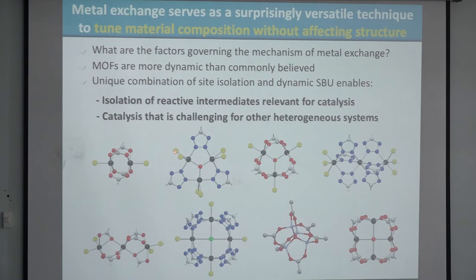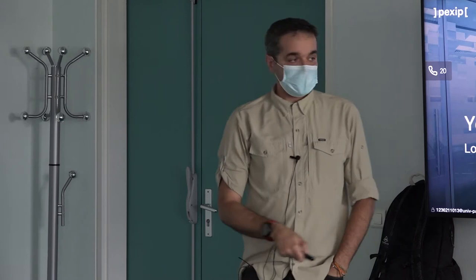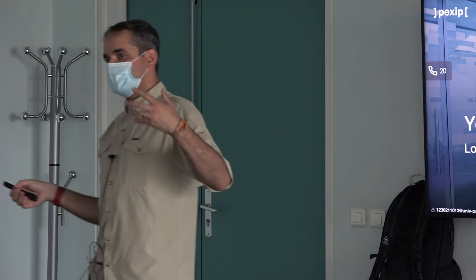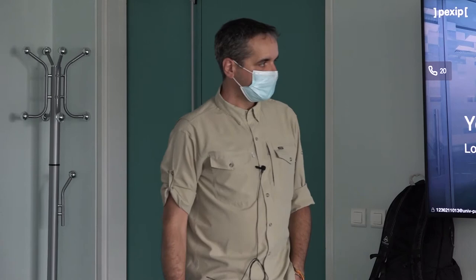Here are some of the clusters we've exchanged. A structure might have two open coordination sites but can only be made with copper — you make the copper structure and then exchange it with nickel, chromium, or vanadium. This is powerful because it allows you to ask fundamental questions: with site isolation, you can isolate very reactive intermediates — radical structures, peroxides, superoxides — put them in a bottle, and do spectroscopy. You can also ask catalysis questions in a heterogeneous system with molecular-level control.